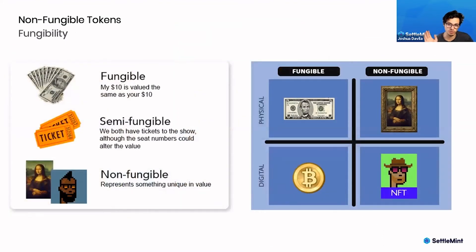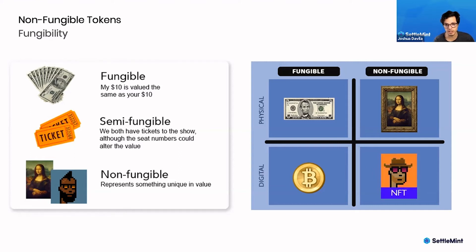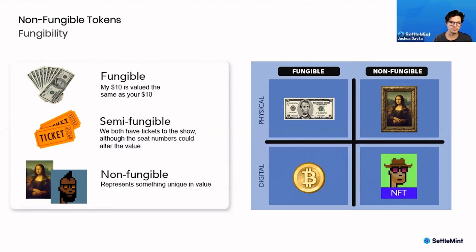To understand what an NFT is, it's important to understand what fungibility is. Fungibility is essentially an asset's ability to be interchanged with other assets of a similar type. The ultimate example of fungibility can be done with money — my ten dollars is valued the same as your ten dollars, or my ten dollars is also worth two other five dollar bills. You're able to interchange them for an equal value.